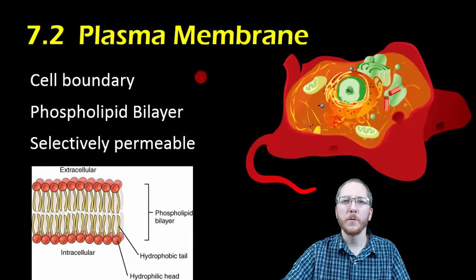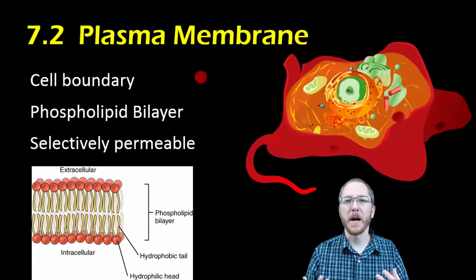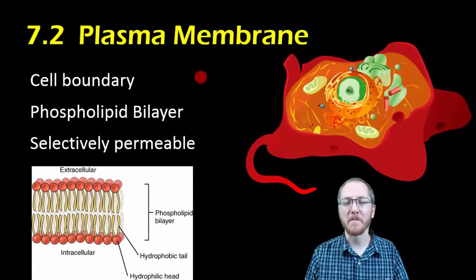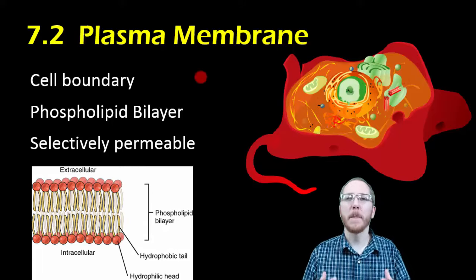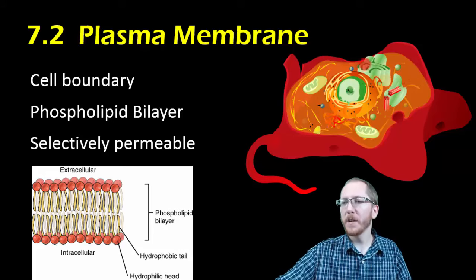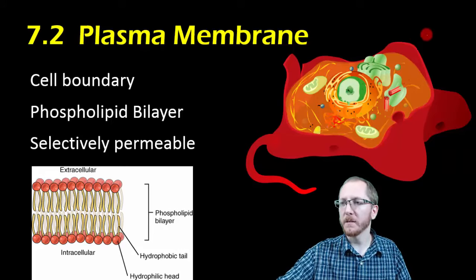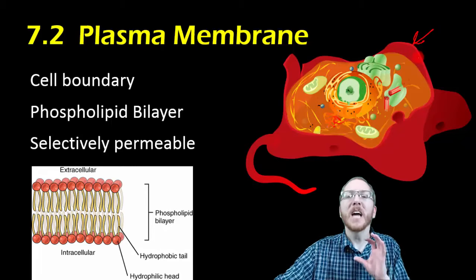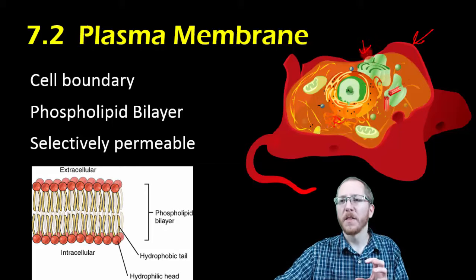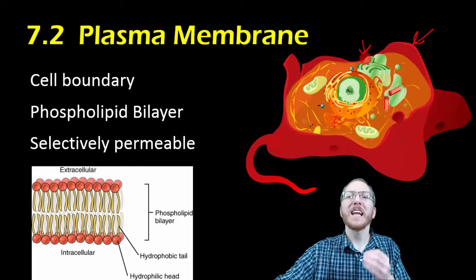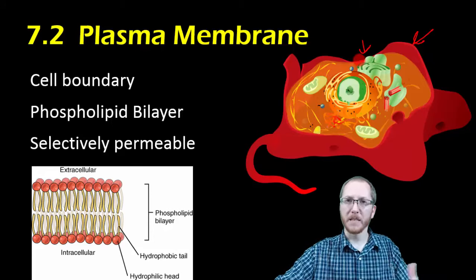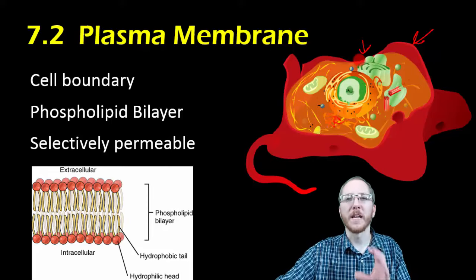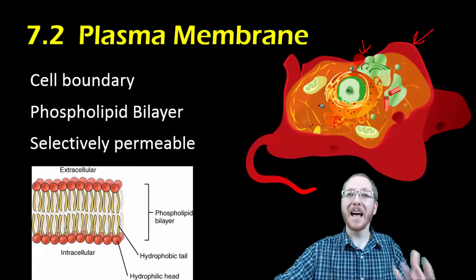Welcome to section 7.2 where we're going to talk about the plasma membrane. You might hear it referred to as the cell membrane, which is the name it's had for quite a long time, but we've changed it now. We use the term plasma membrane to make clear that this membrane surrounding the cell is the same type of membrane found inside the cell that many membrane-bound organelles possess. There's no major fundamental difference between the plasma membrane and those of internal organelles in a eukaryotic cell.